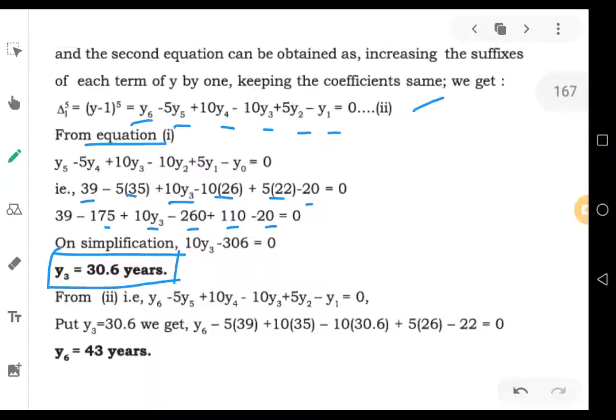This is the second equation. The second equation, y3 is now substitute. Now substitute values: 5 into 39 plus 10 into 35 minus 10 into 30.6. Now y3 substitute, 5 into 26 minus 22. On simplification, you will be getting the answer y6 equals to 43 years.